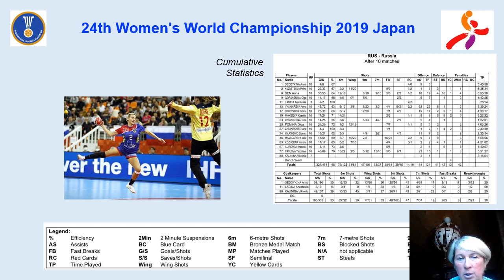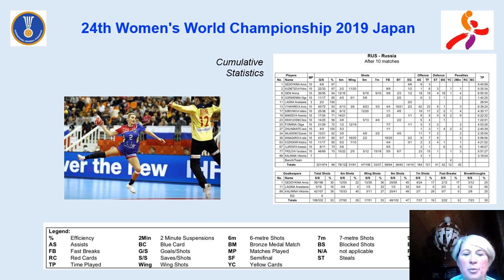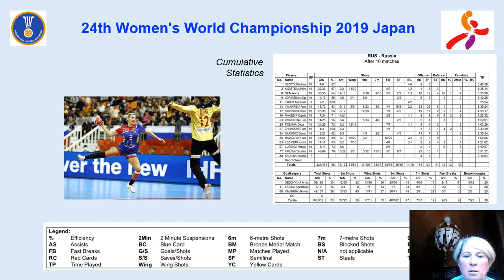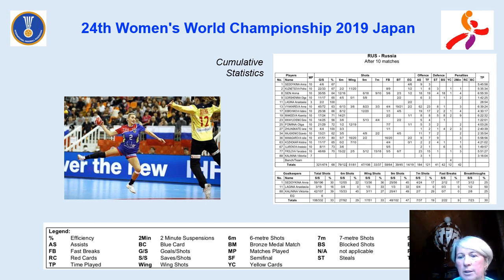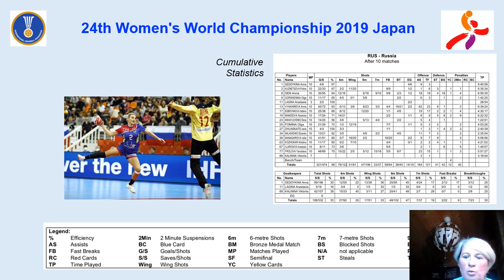In our research we used analysis of game efficiency of the Russian national women's team at the 24th Women's World Championship 2019 in Japan. We use cumulative statistics with components you can see in this picture: efficiency of attack, of defense, assists, fast break, efficiency of fast break, results of 7-meter shots, blocked shots, and more. We also used video analysis of every match and notes of the assistant coach during this tournament.